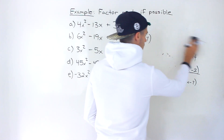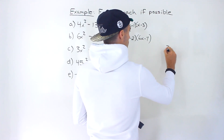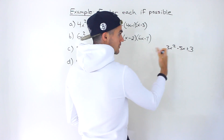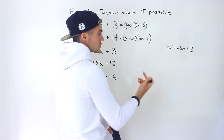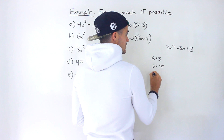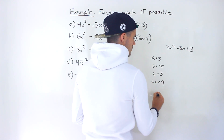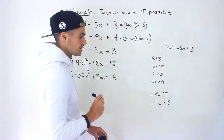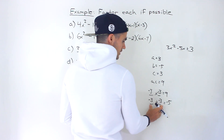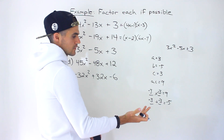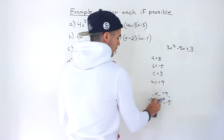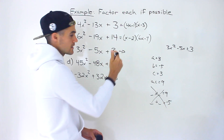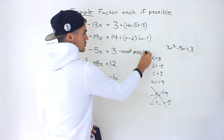Moving on to part C: 3x² minus 5x plus 3. First check — can we take anything out? We have a 3 and a 3, but 5 doesn't have a factor of 3, so nothing comes out. By decomposition, AC is 9. We need two numbers that multiply to 9 and add up to negative 5. Negative 3 and negative 3 are close but add up to negative 6, not negative 5. There are no two numbers that satisfy both conditions, so this quadratic is not possible to factor.